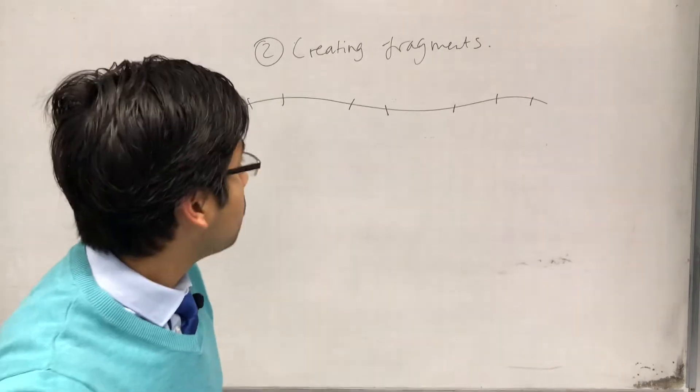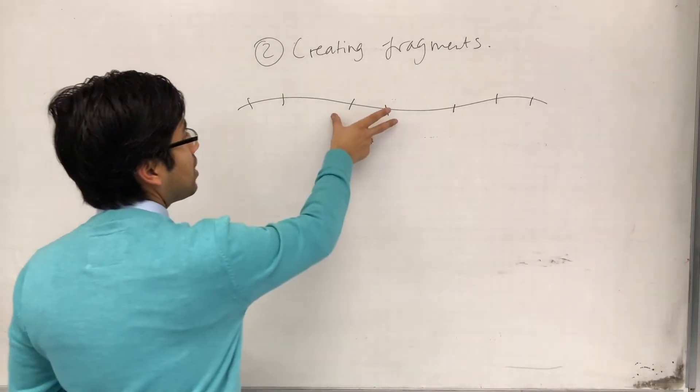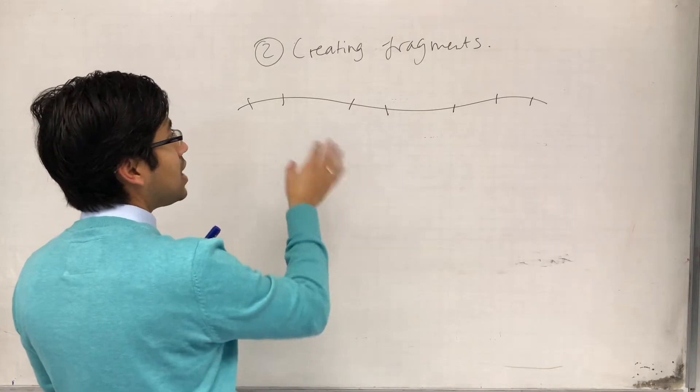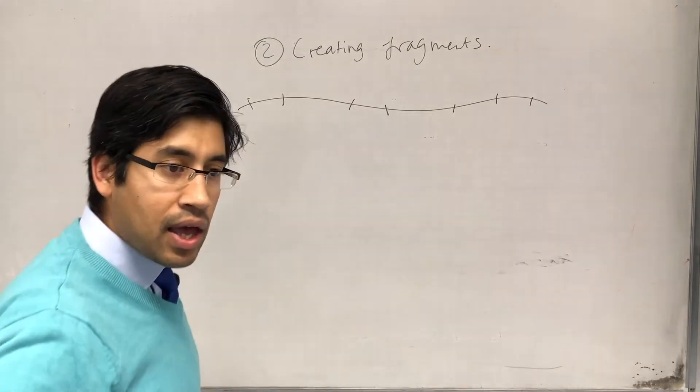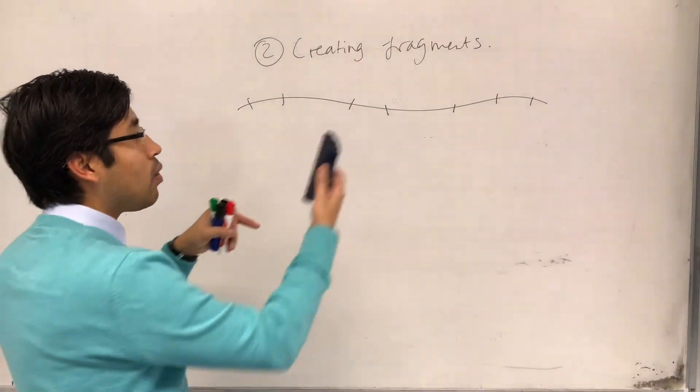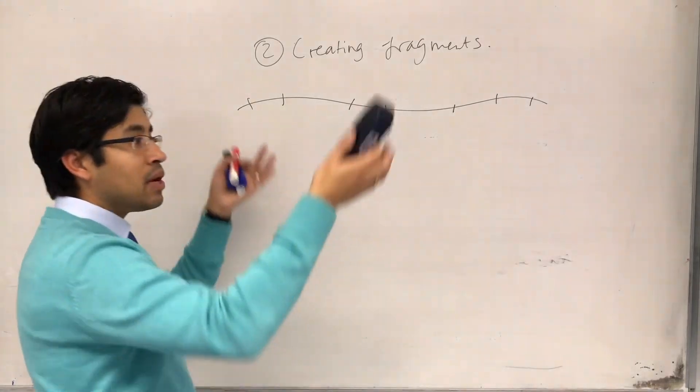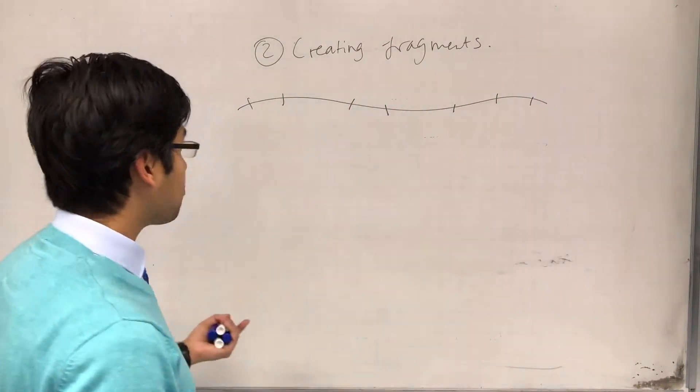Ideally, what we want is to chop the DNA so that the fragments contain introns, and the introns then affect how long these fragments are, and then we can compare fragments from different people or species.